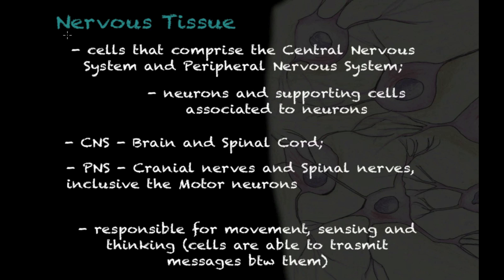Today we are going to talk about nervous tissue. This is one of the four basic types of tissues found in humans and animals. This overview will give you the basics so you can study in more detail in classes such as histology. The cells of the nervous tissue comprise your central nervous system and your peripheral nervous system.